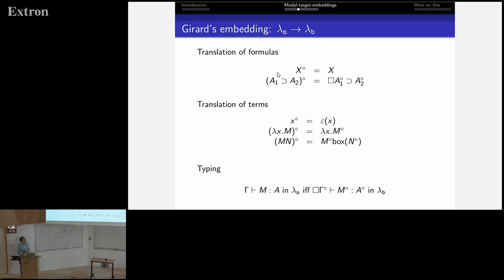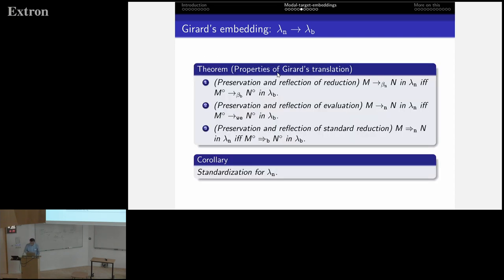Girard's embedding: the translation is well known — the translation of formulas, the translation of terms, the behavior of typing, as in the first slide copied from the textbook. Computationally, we can see this as a kind of compilation — protecting arguments with boxes, not with a lambda, but with a box. When a box is ever substituted, the box is opened by epsilon. This has very strong properties: preservation and reflection of reduction, evaluation, and standard reduction. From these properties, we can extract the standardization theorem of the ordinary lambda calculus from the properties of Girard's mapping into this system.